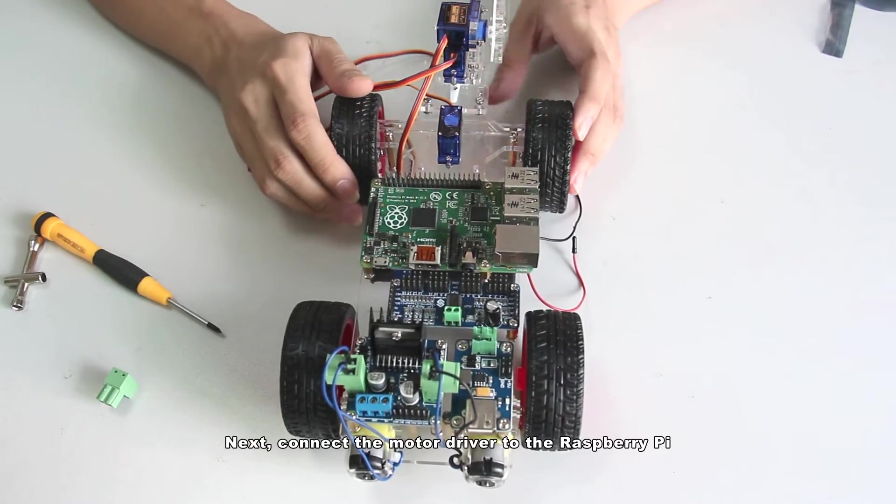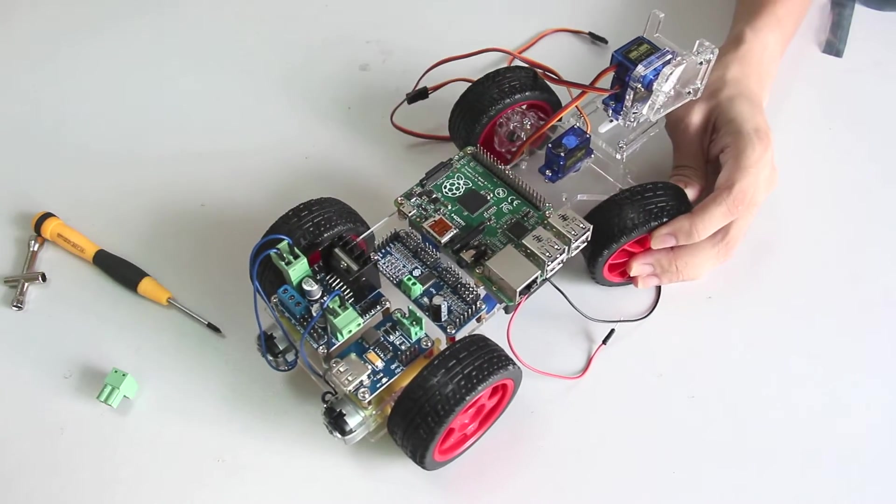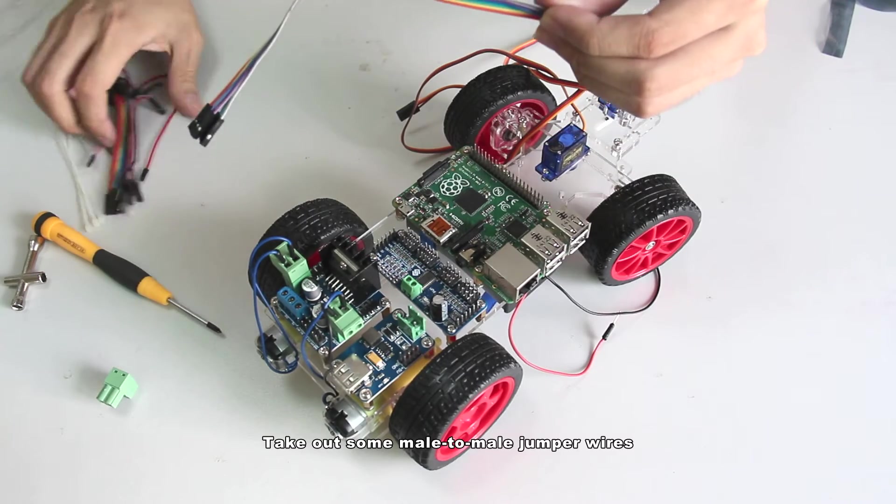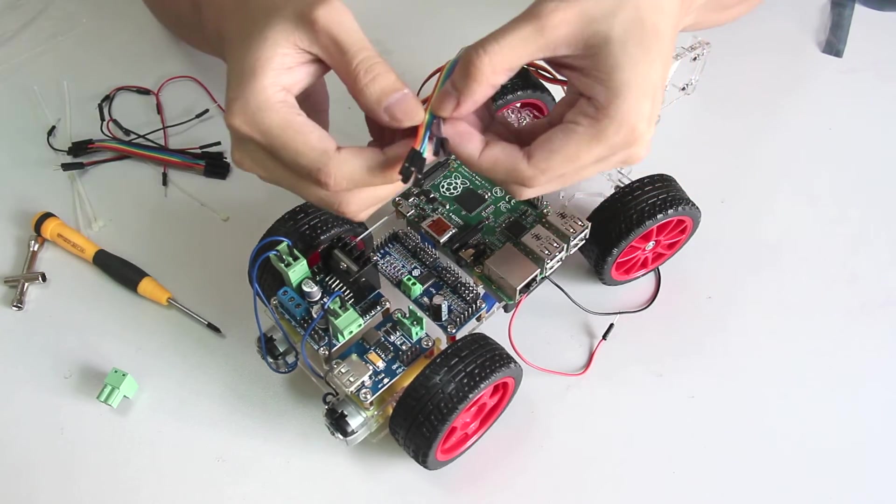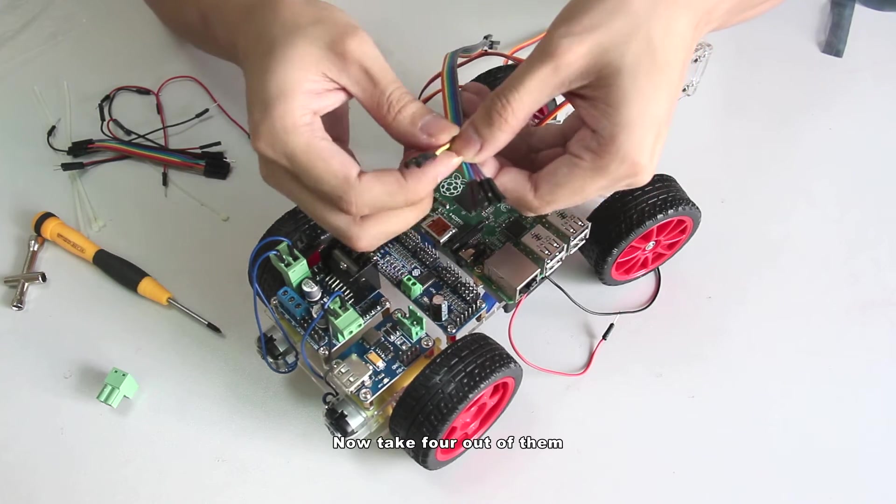Next, connect the motor driver to the Raspberry Pi. Take out some male to male jumper wires. We need to use the longer ones. Now take 4 out of them.